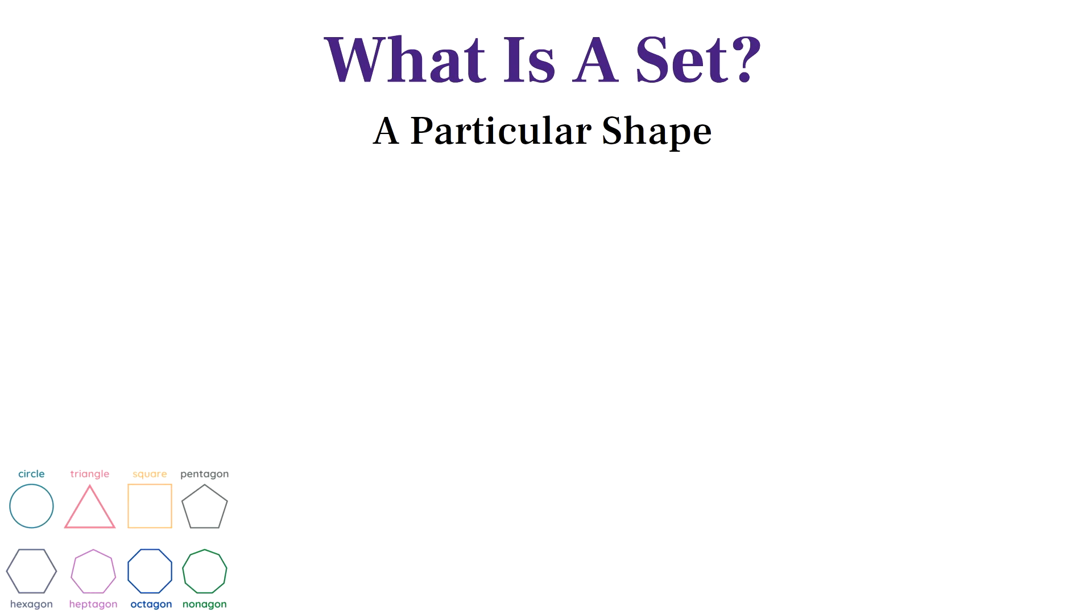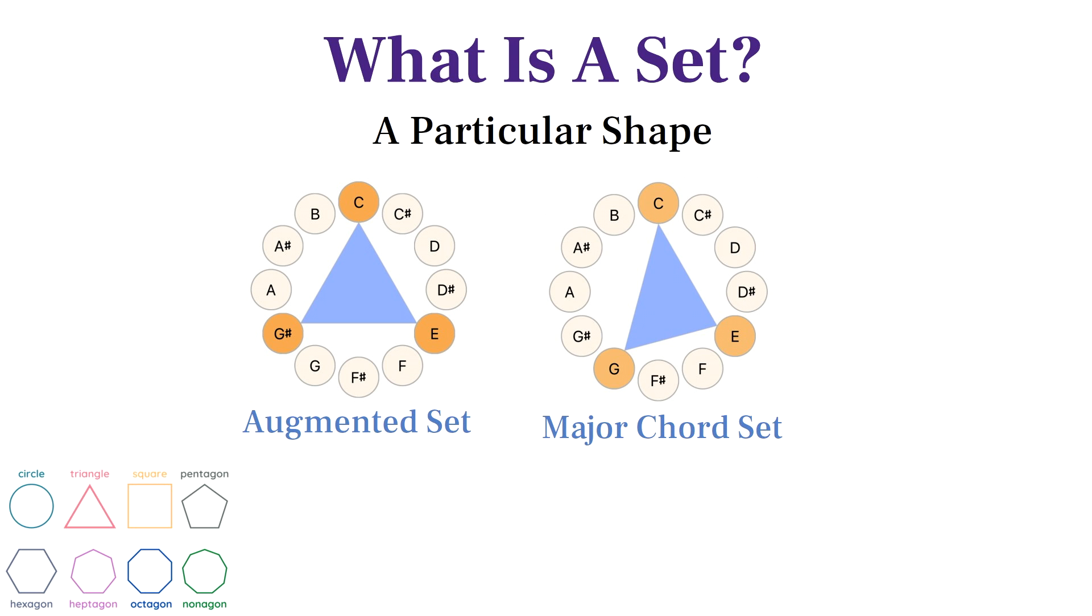Using our geometric perspective, we can simply define a set as a particular shape. For example, an equilateral triangle shape is the shape of the augmented set. This uneven triangle is the shape for the major chord set.